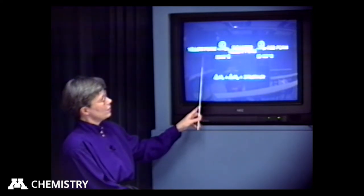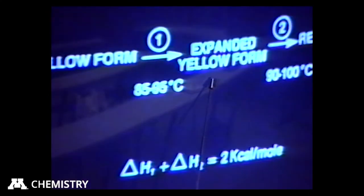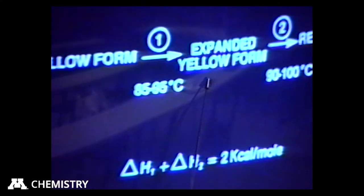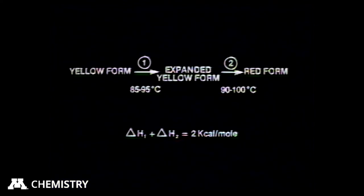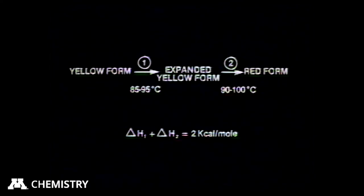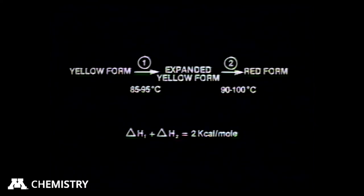After videotaping the transformation, we still initially didn't see the other unusual step. But I'm going to show you videotape where you'll see that the yellow form changes to an expanded form and one end of the crystal actually pops out — and after that happens, you get the red form. It took us many, many viewings of that tape to realize that was happening. The first four or five times we viewed it, we didn't even see the crystal expansion. You're going to have to look very carefully.